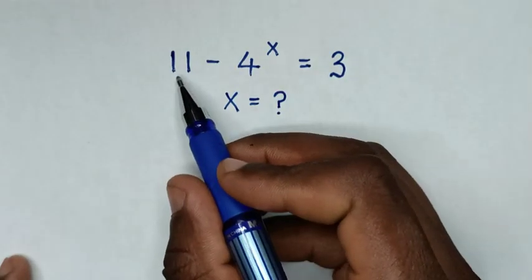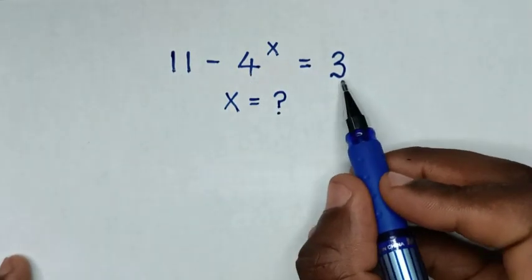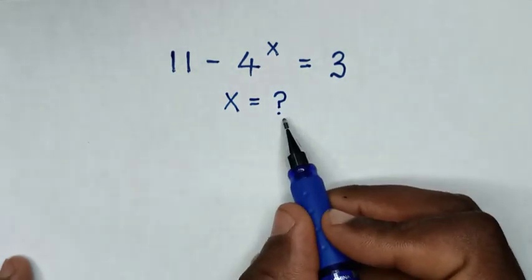Hello, how to solve 11 minus 4 power x is equal to 3 to find the value of x from this equation?